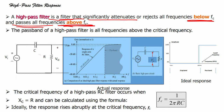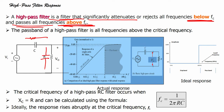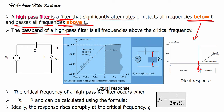The main thing that is different from the low pass filter is the placement of the R and C. In the low pass filter, the resistor was first and the capacitor was in this particular place. In the high pass filter, the capacitor comes first, followed by the resistor. The pass band of a high pass filter is all frequencies above the critical frequency.